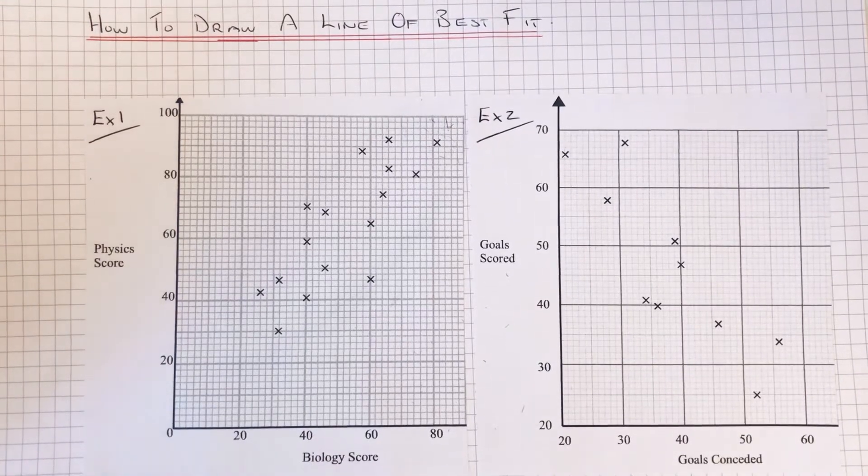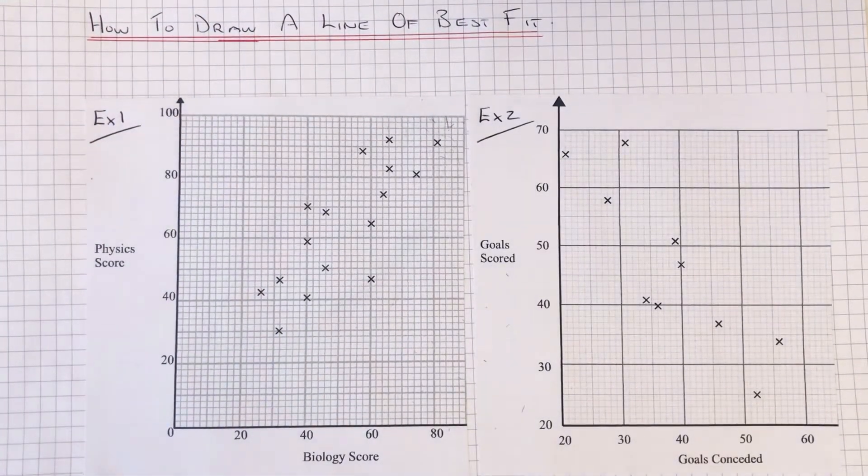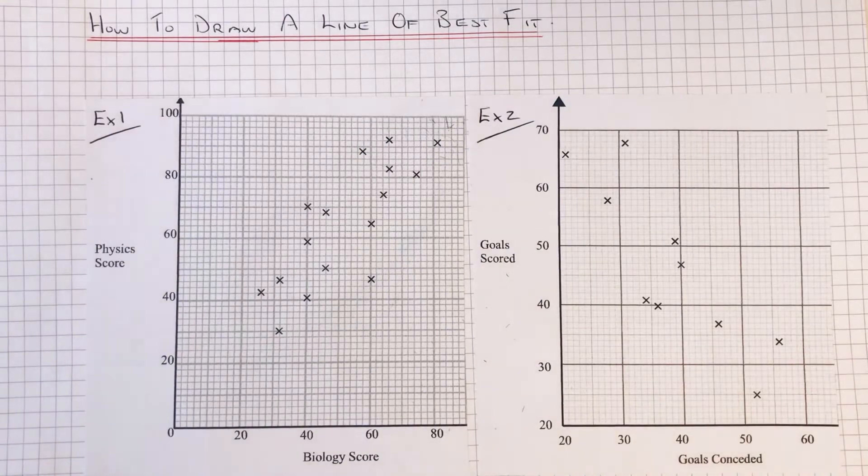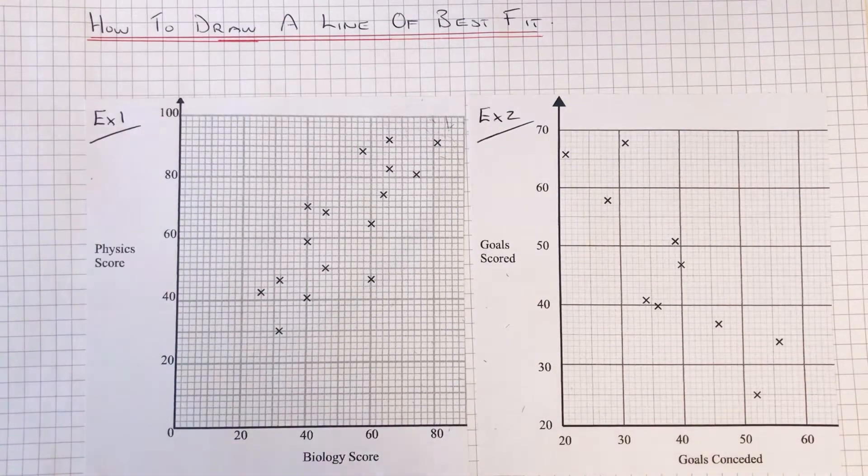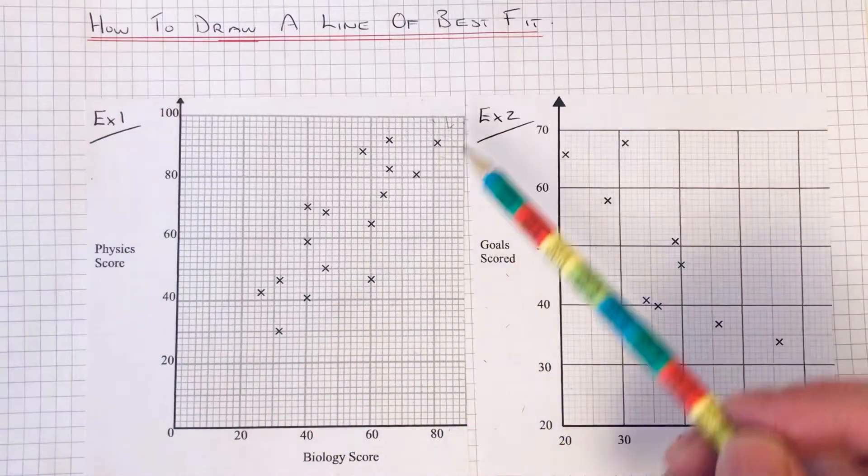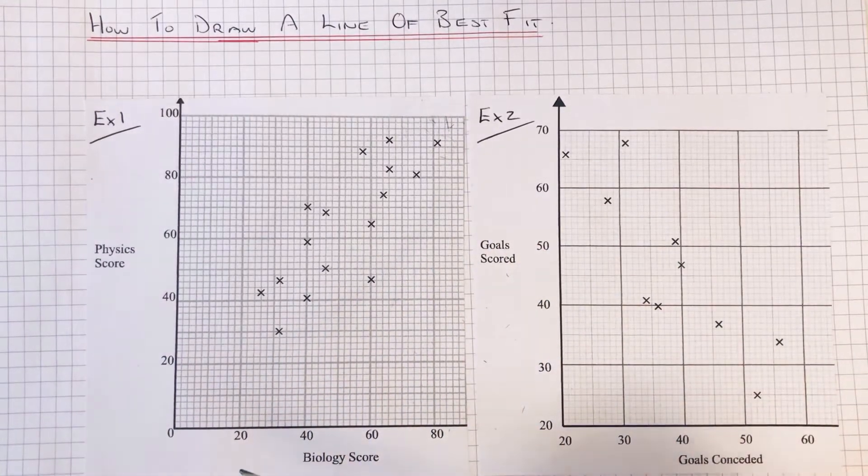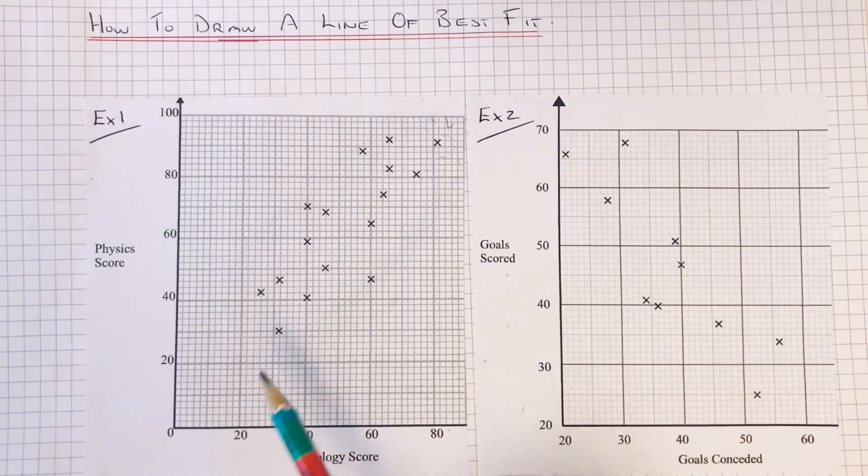Hi guys, welcome back. Today I'm going to show you how to draw a line of best fit on a scatter diagram. So a line of best fit shows the general trend on the scatter diagram.